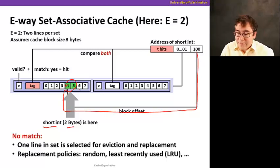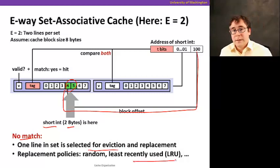If there's no match, one line, one of those is selected for eviction and replaced. As I said before, we normally use this policy called least recently used.